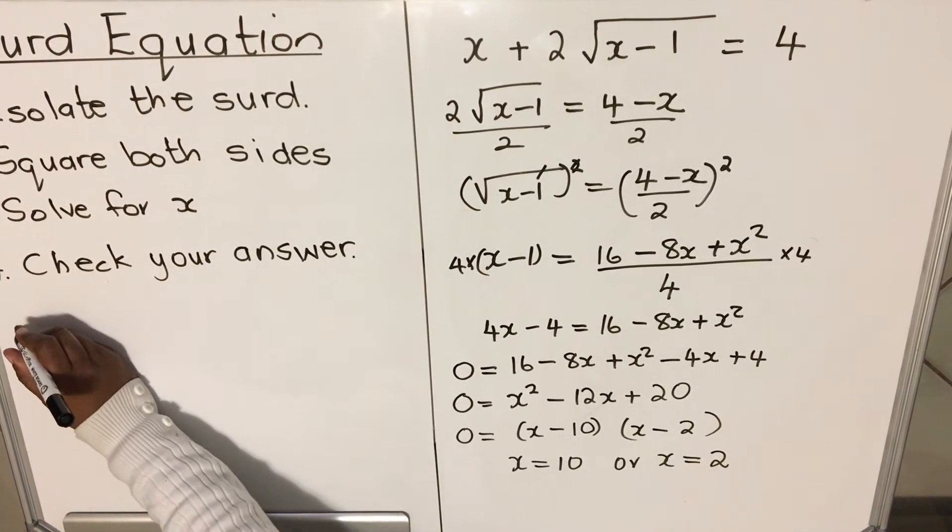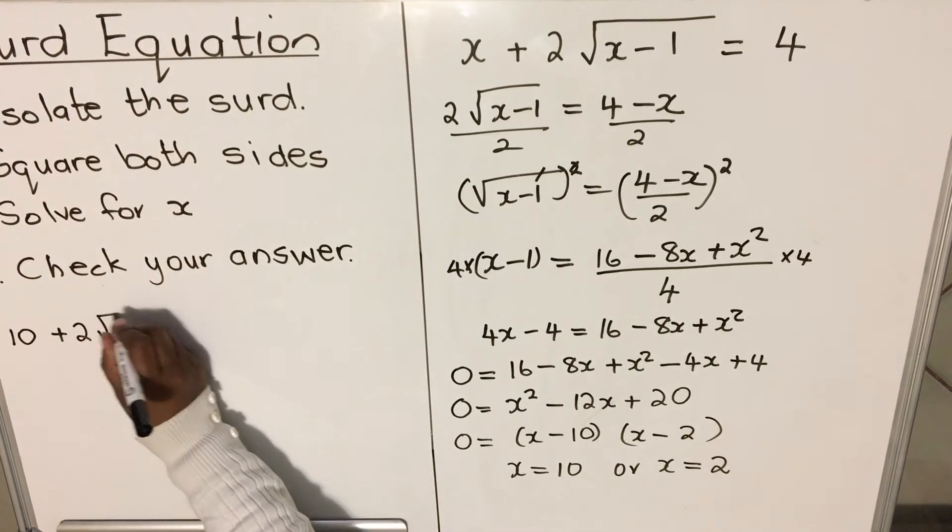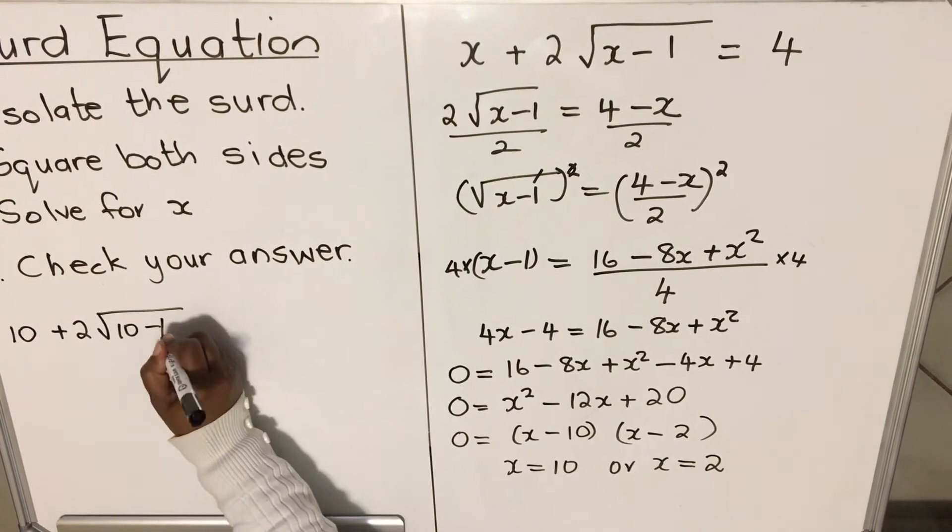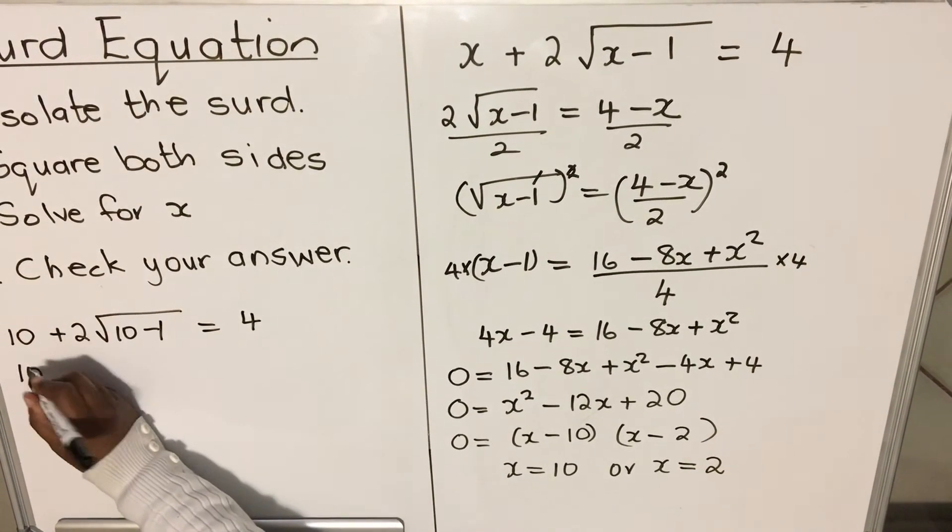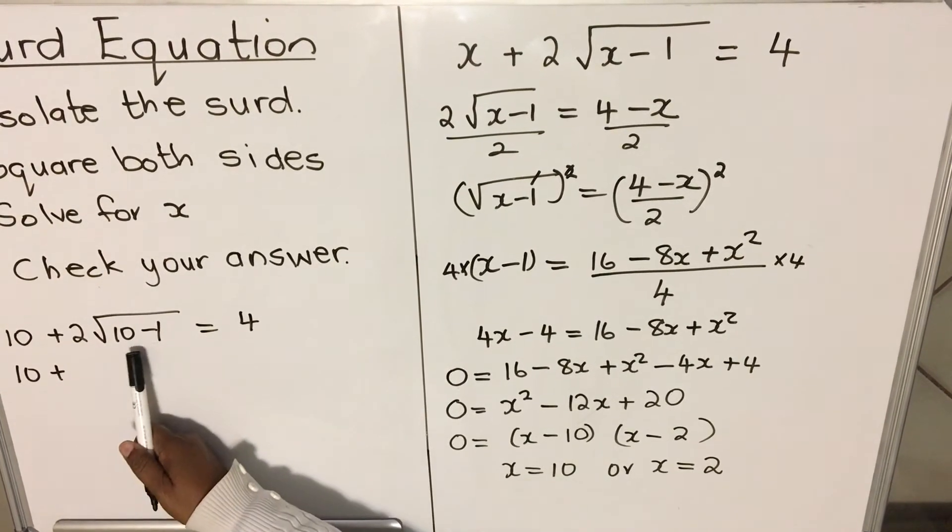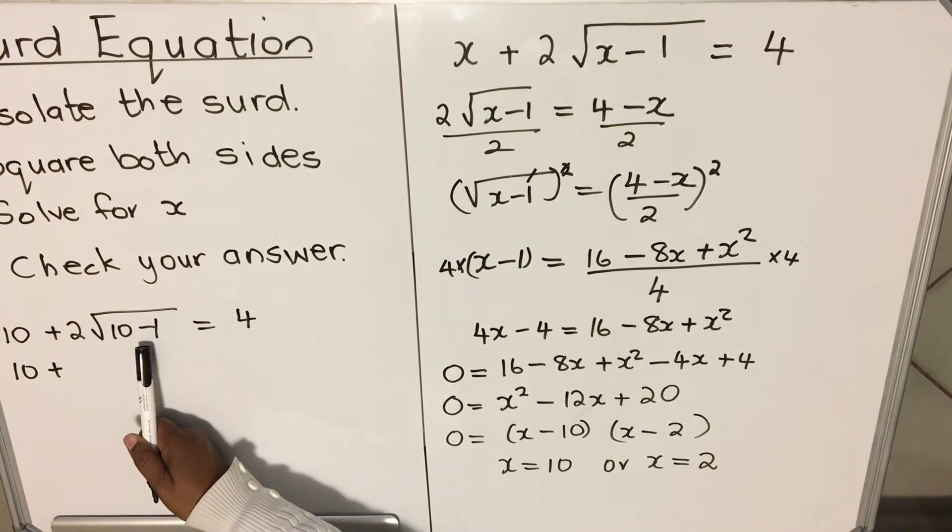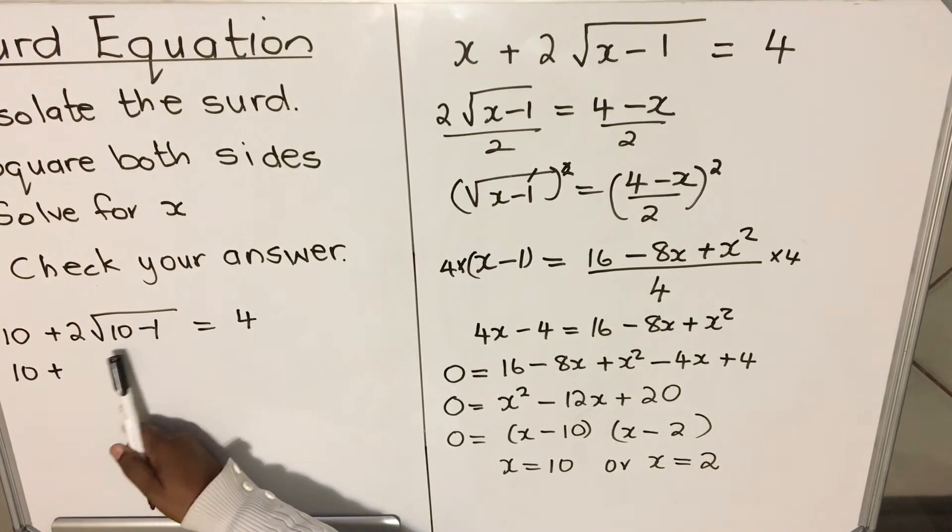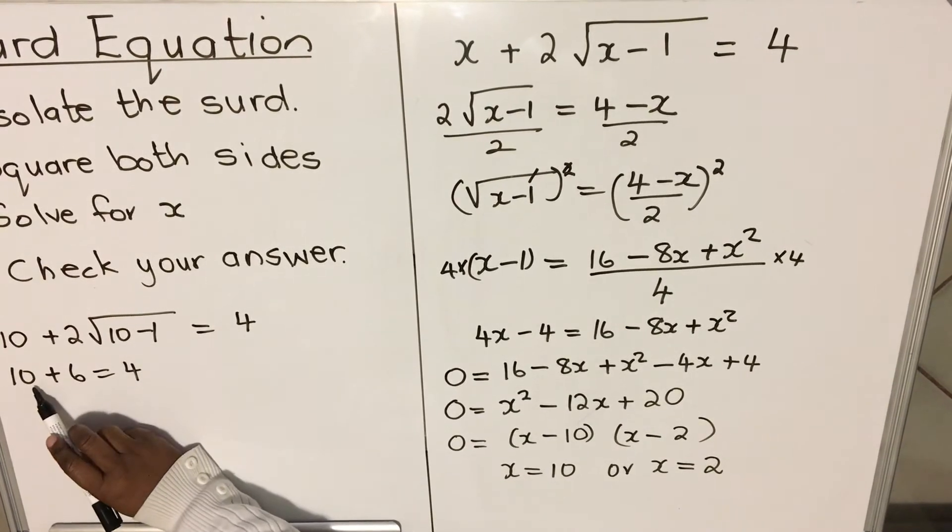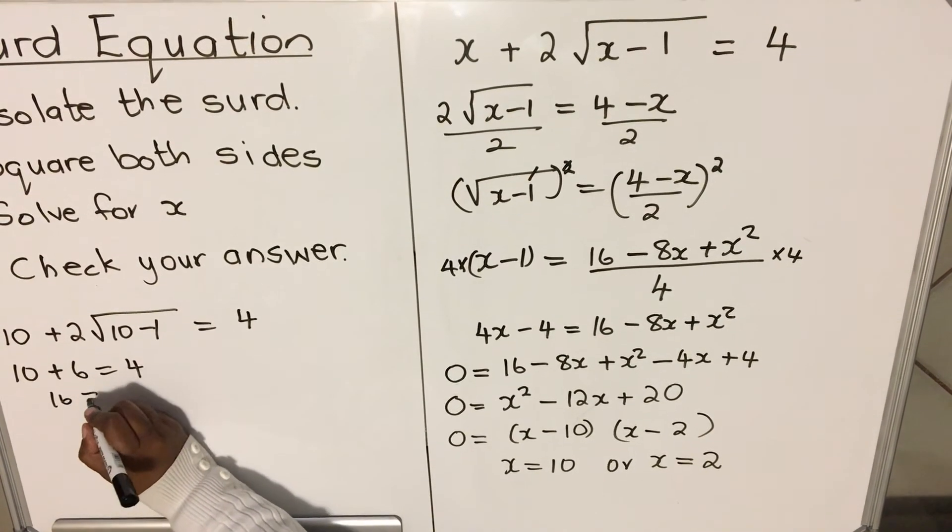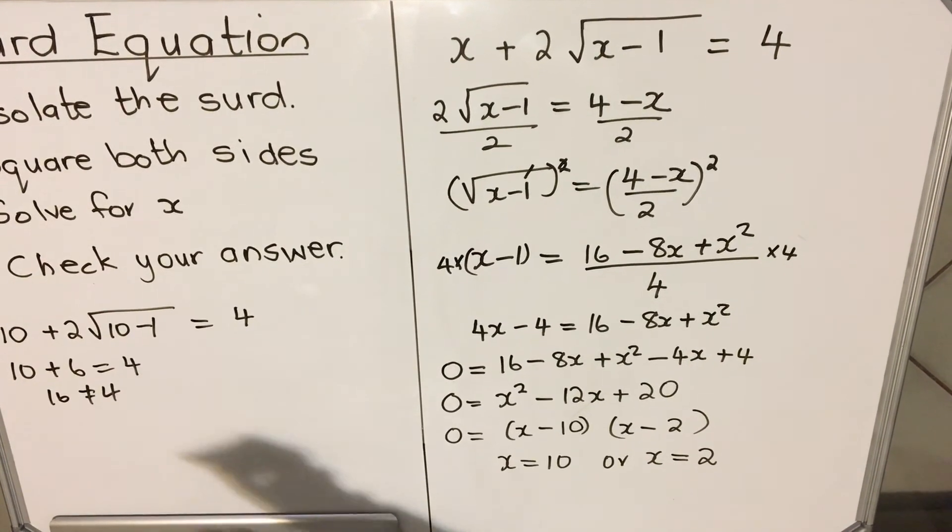We substitute x = 10: 10 + 2√(10-1) must give us 4. Then we have 10 + 2√9. Square root of 9 is 3, 3 times 2 is 6. So 10 + 6 = 16, not 4. You don't need to write that in your book. So it means out of these two answers, this one is wrong.